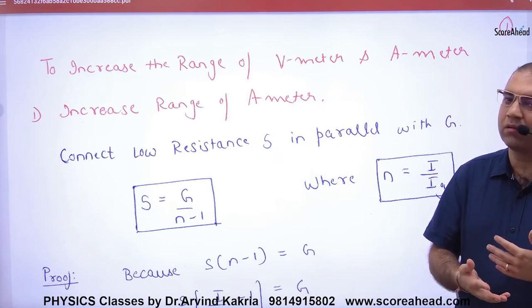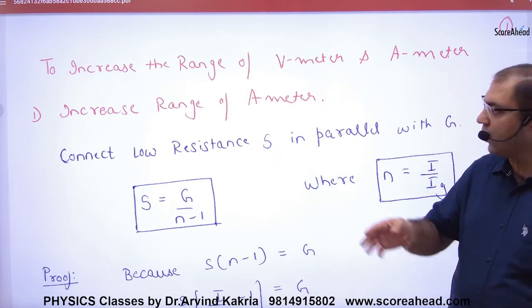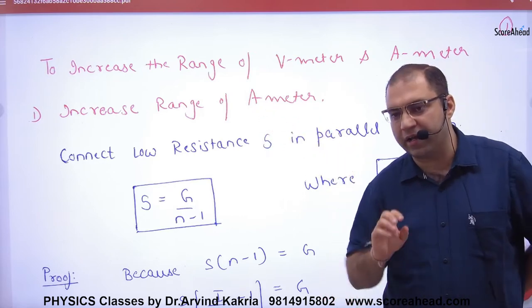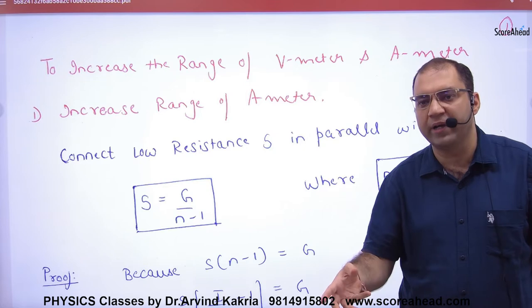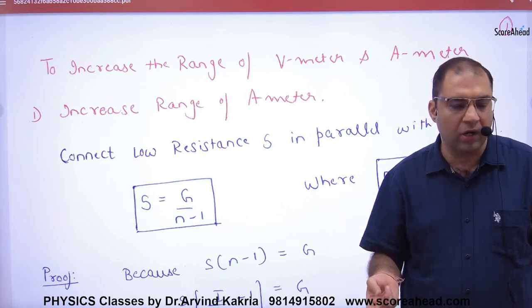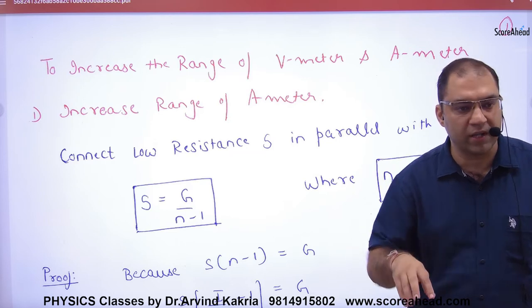Some places are written like this: if you want to increase the range of ammeter, it means that you have a galvanometer with current IG, and what will you do? Make an ammeter. That means you have to increase the range of ammeter.